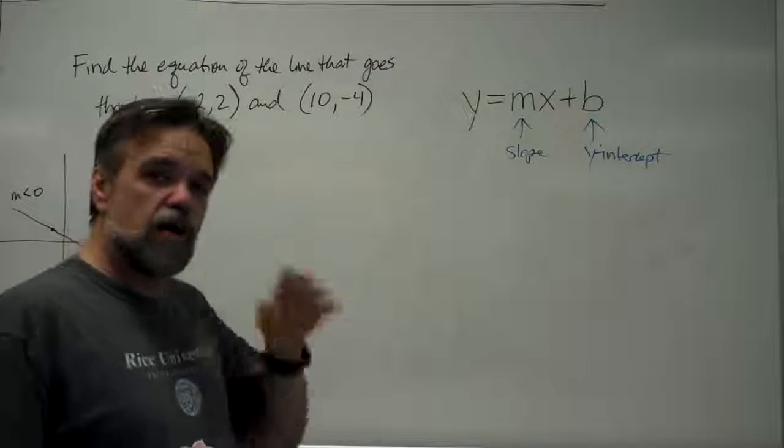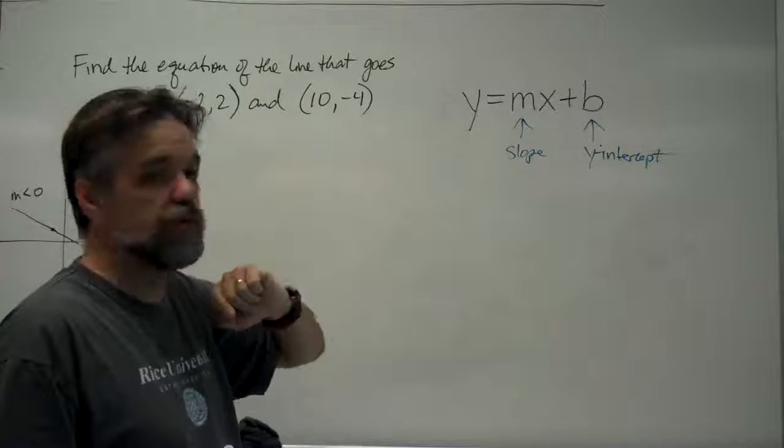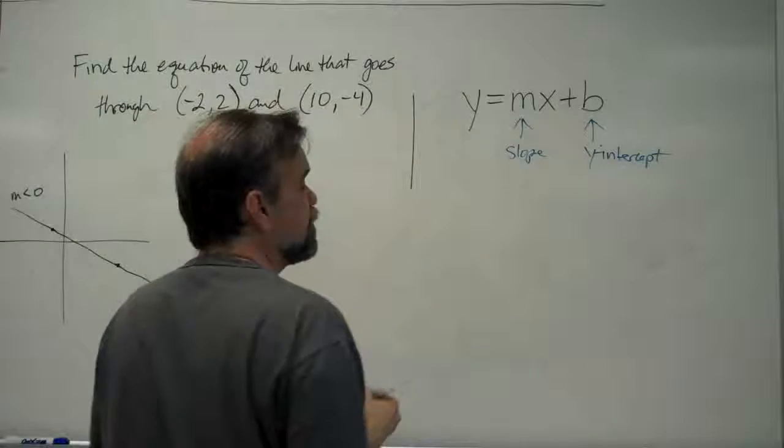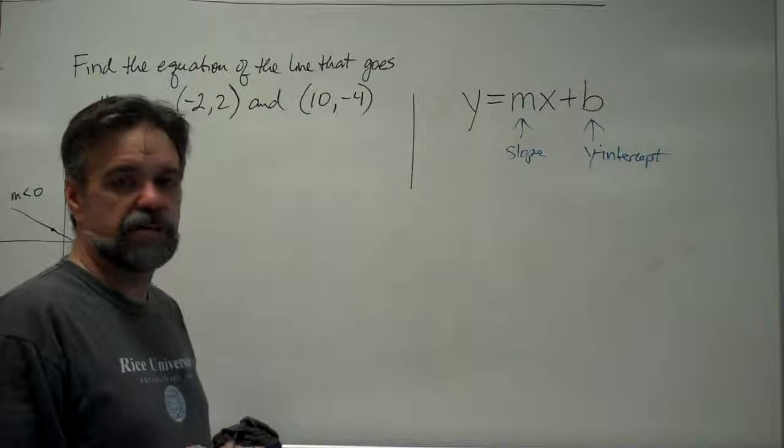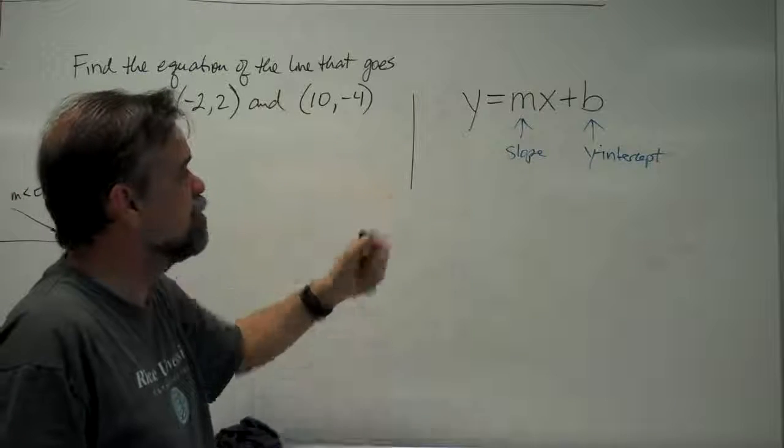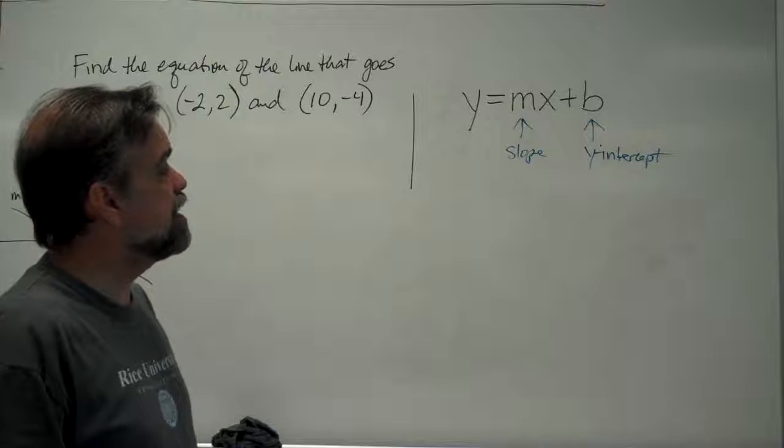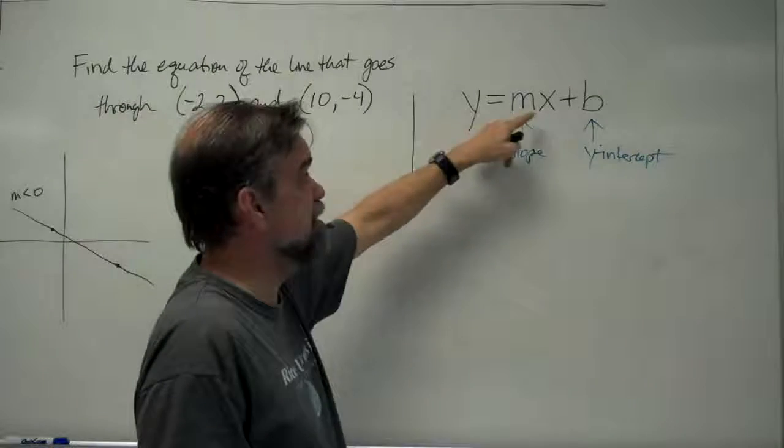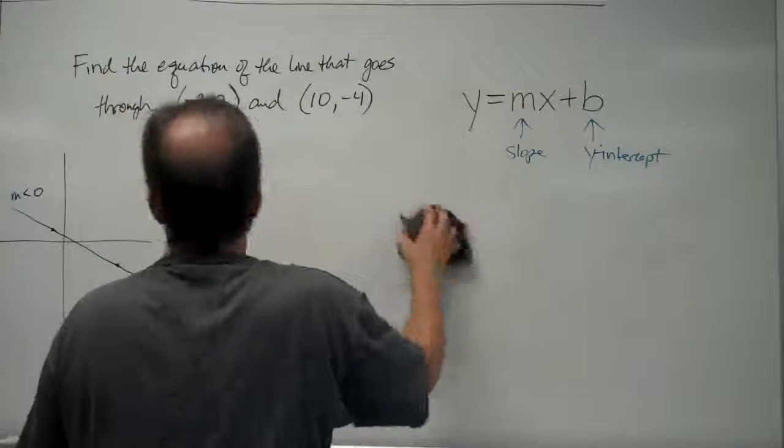But I said almost every line can be written this way. There is one type of line that cannot be written this way, and that is the vertical line. Vertical lines, the equation for vertical lines always look like x equals whatever number every single point on the line has for its x-coordinate. It can't be written y = mx + b simply because you don't have an m and you don't have a b. All right, so let's get back to our problem.